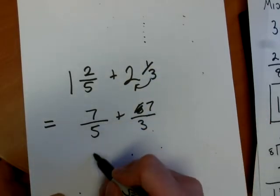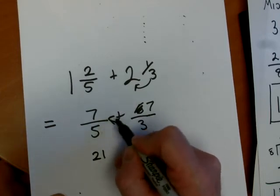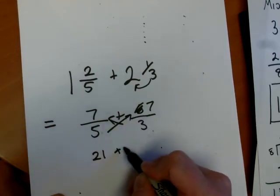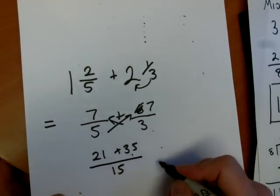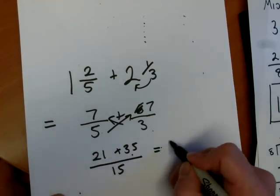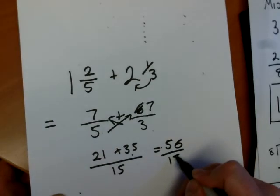So I cross-multiply. Three times 7 is 21. Five times 7 is 35. Five times 3 is 15. And that's done. So we're now at the top, which is 56 over 15.